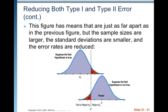This figure has means that are just as far apart as the previous figure, but the sample sizes are larger, which means the standard deviations are smaller and the error rates are reduced. We end up with smaller red error regions. So our alpha region is smaller, our beta region is smaller, and we're more powerful.